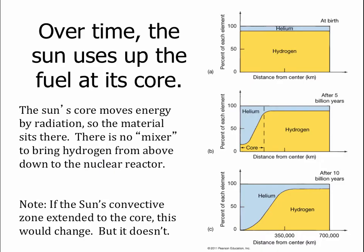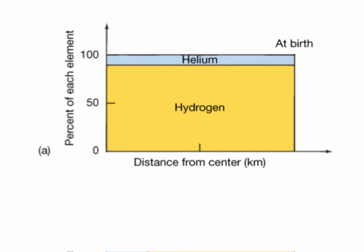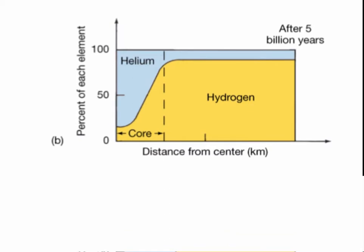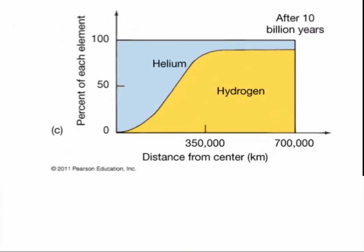Let's now look at the inside of the sun. When the sun was born, it was about 75% hydrogen, the rest helium, with a little of the heavier stuff. This mix was the same all the way through the star. But when the sun began nuclear fusion at its core, it started converting hydrogen into helium — using up the hydrogen and making more helium. Further out, outside the sun's core, it's not doing nuclear fusion, so it still has the same amount of hydrogen and helium. The sun is not mixing that extra hydrogen down into the center.